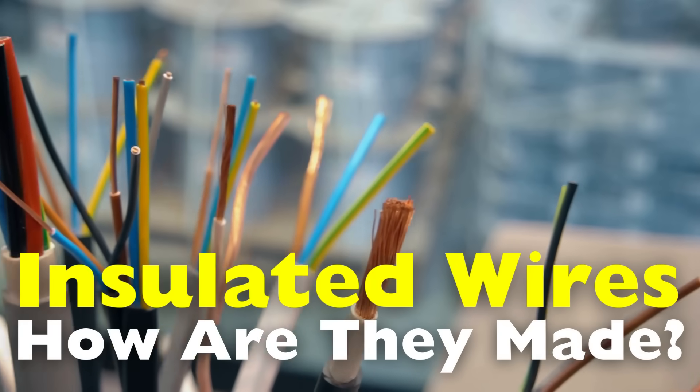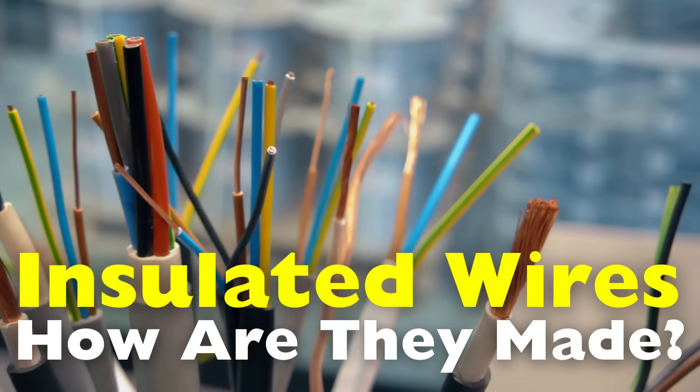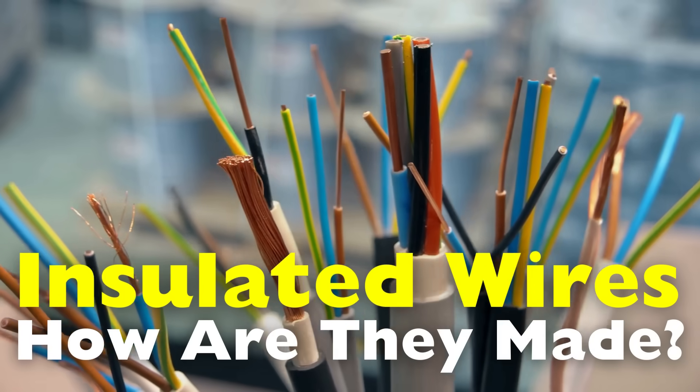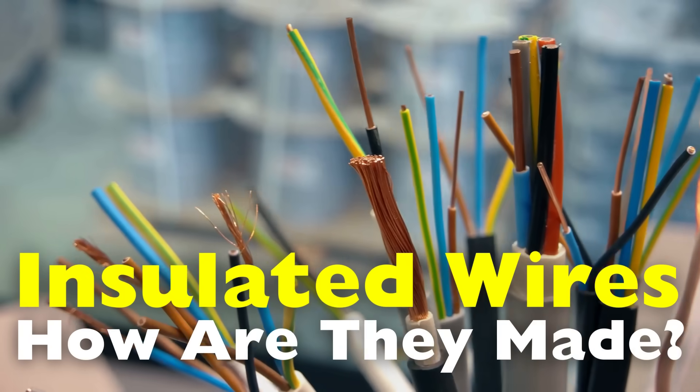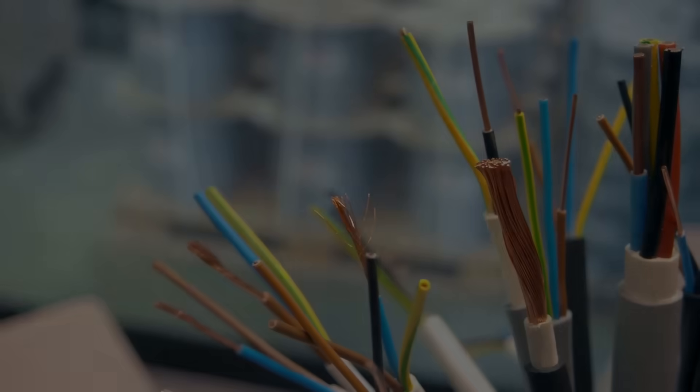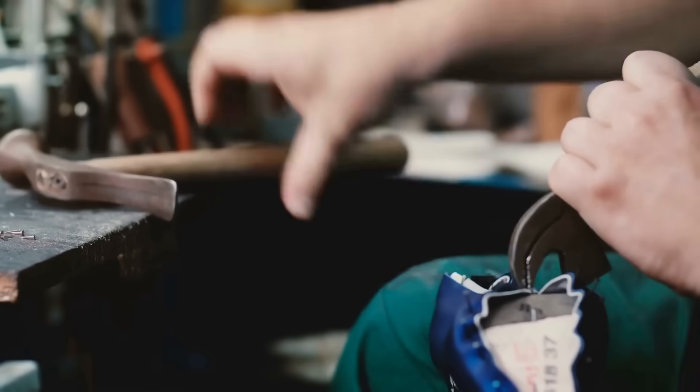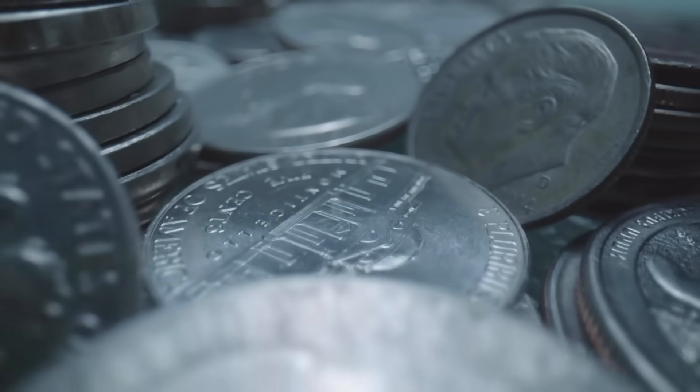In this video, we'll explore the intricate steps involved in making insulated wires, from the initial extraction of raw materials to the finished product that ensures safe and efficient electrical transmission. Welcome to the History of Simple Things, where we delve into the fascinating history behind the little things that shape our world.